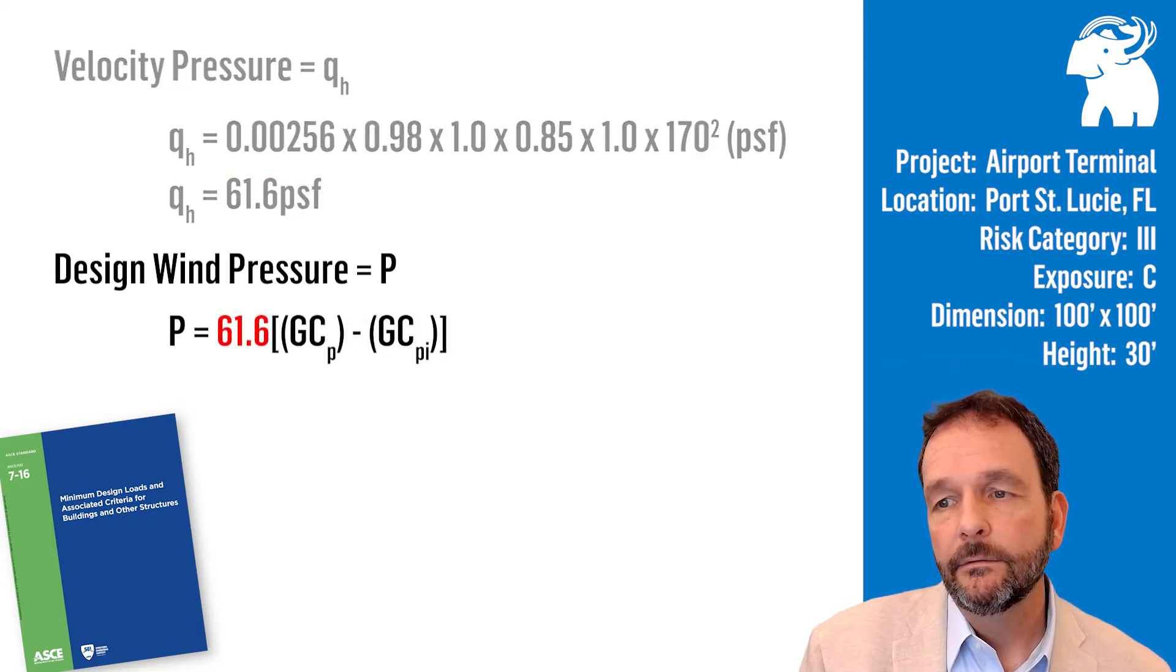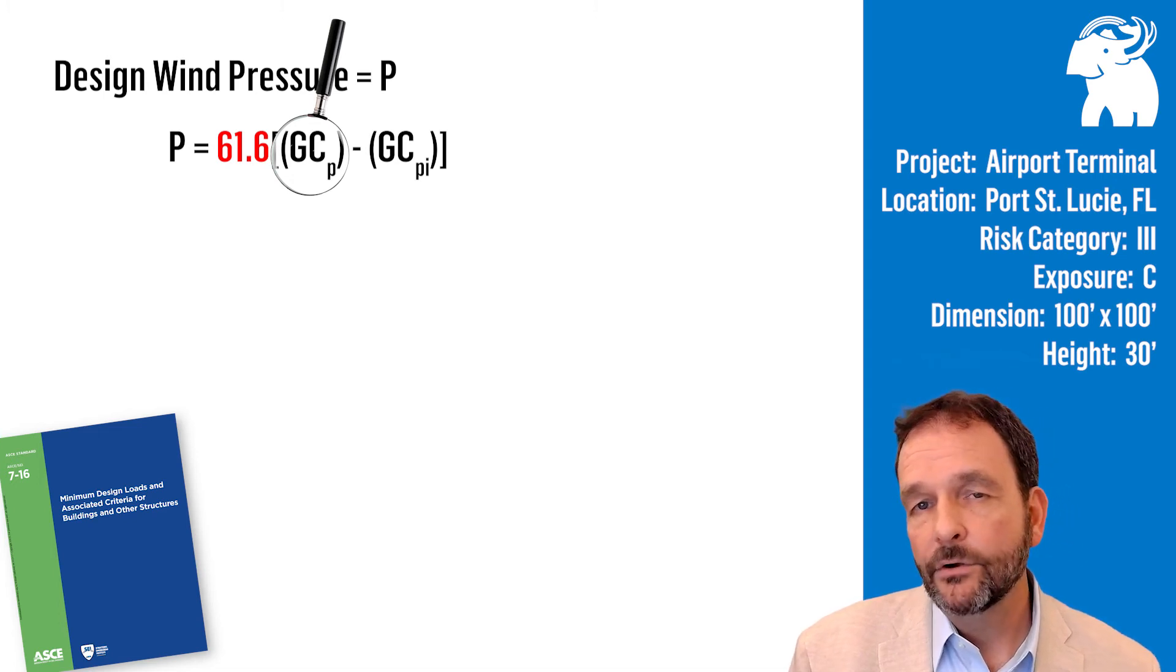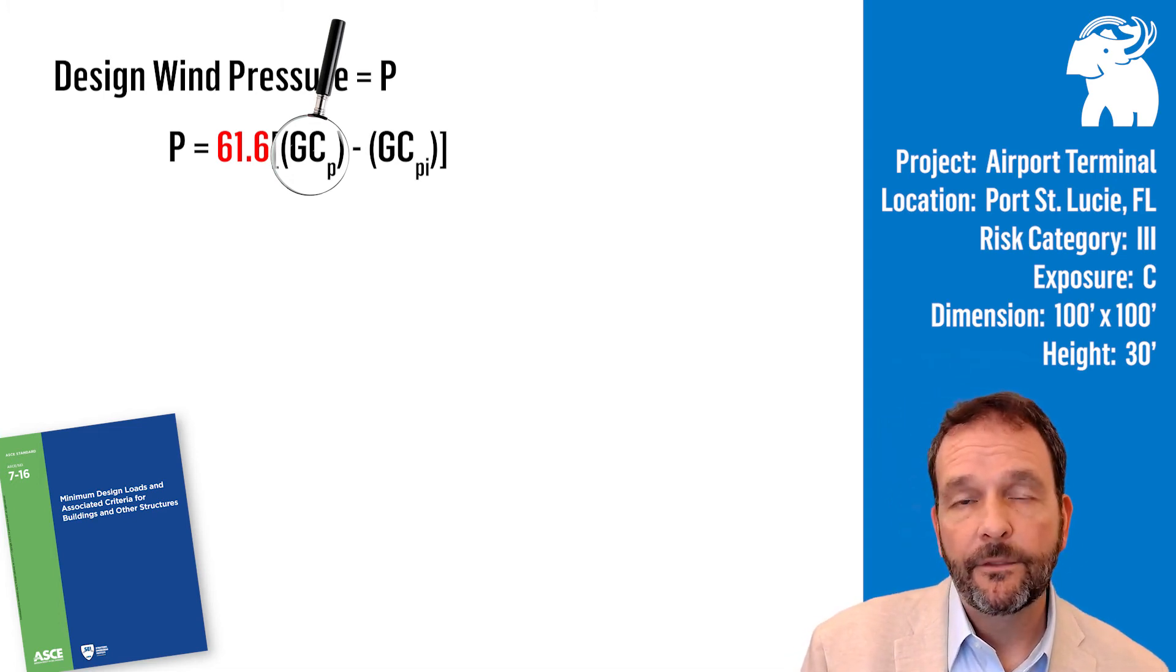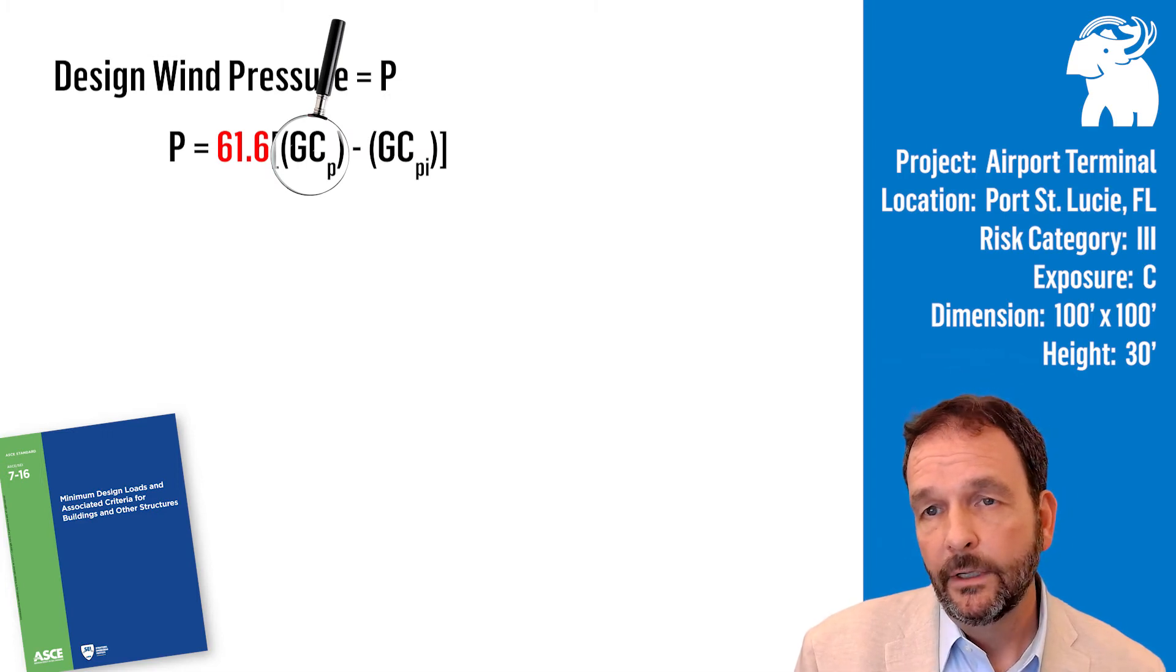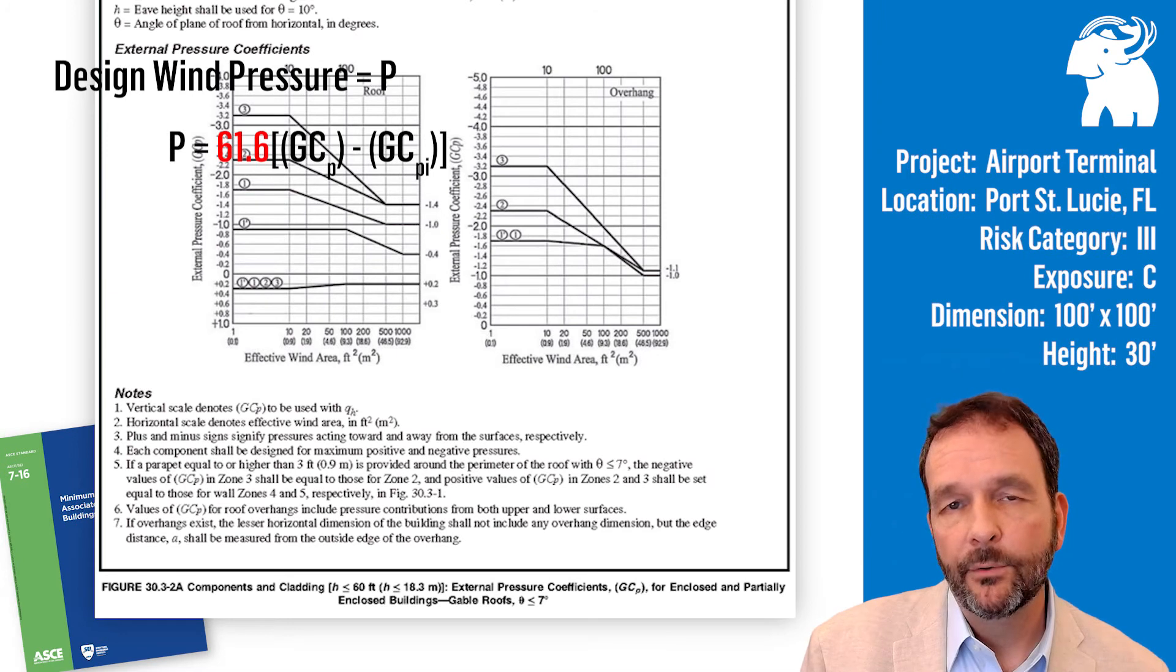Our next variable in the design wind uplift pressure equation is GC sub P, the external pressure coefficients. For our example, we had a 100 foot by 100 foot, 30 foot high, low slope roof. So we refer to figure 30.3-2A for components and cladding, since roofing is components and cladding. This figure is for low slope roofs, less than 60 foot high.